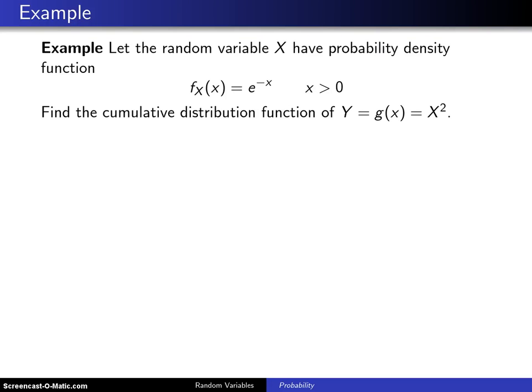Here is a second example of transforming random variables. Let the random variable X have probability density function f_X(x) = e^(-x), and that's defined on a support x > 0.